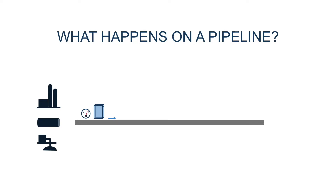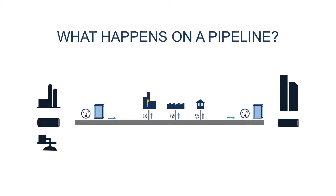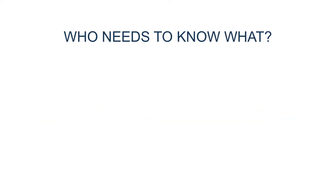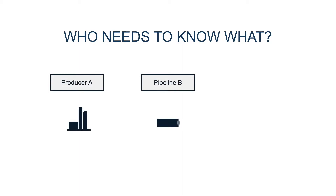As the gas moves down the pipeline, there are connections to towns, industrial customers and power stations along the way. And finally, when the pipeline reaches its destination, the gas makes its way into a city, another pipeline or maybe even a storage facility. On top of that, there are the companies moving the gas around, whether they be pipeline operators, gas producers or retailers that are buying and selling the gas.